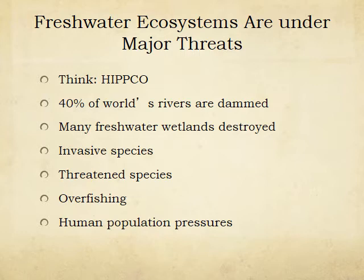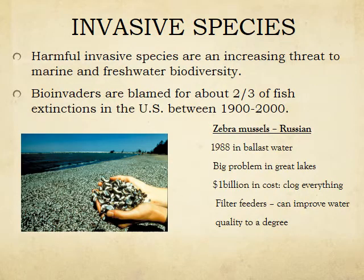40% of the world's rivers are dammed, which causes serious issues. Many freshwater wetlands are destroyed. We have invasive species everywhere, a lot of threatened species, overfishing, and lots of human population pressures.